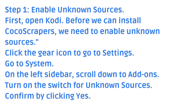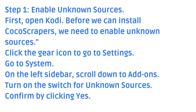Step 1: Enable Unknown Sources. First, open Kodi. Before we can install Cocoa Scrapers, we need to enable Unknown Sources. Click the gear icon to go to Settings. Go to System. On the left sidebar, scroll down to Add-ons. Turn on the switch for Unknown Sources. Confirm by clicking Yes.